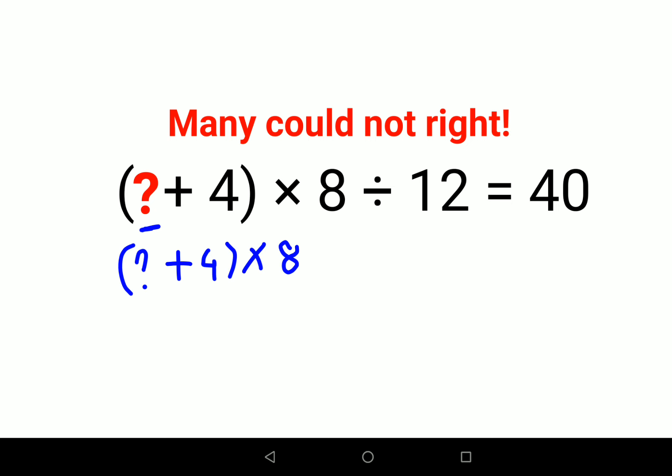Now since here we had divided by 12, so when you shift the number 12 on the other side, obviously the sign also changes. So instead of division, it becomes multiplication.